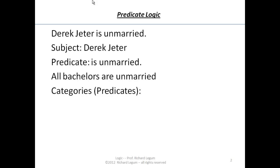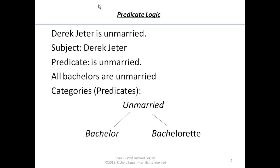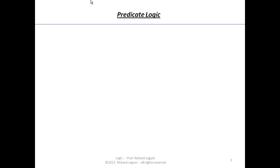Notice that predicates put things into categories — the category of being unmarried, being a bachelor. With 'all bachelors are unmarried,' we have a category of being unmarried, and within that category, bachelors and bachelorettes. Derek Jeter would be on the male side — the bachelor. Bachelors are just unmarried males. Now we're understanding what predicates are and what role they play in language, and let's see what they do to our propositions and how they make the logic of arguments work.